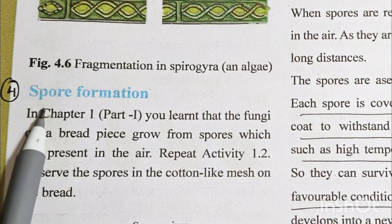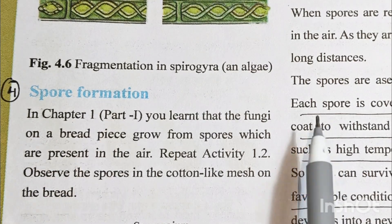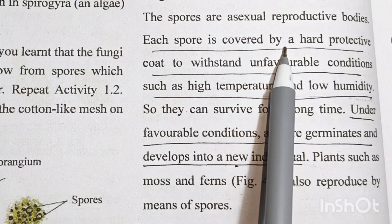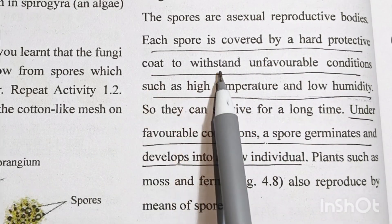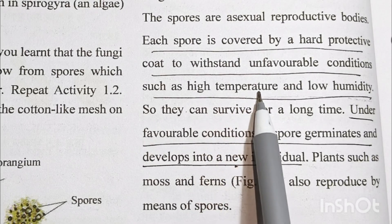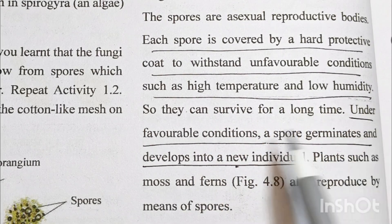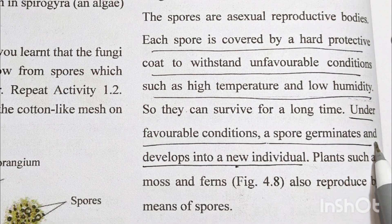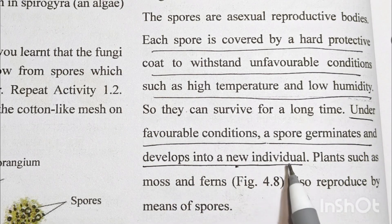Number 4 is spore formation. The spore is covered by a hard protective coat to withstand unfavorable conditions such as high temperature and low humidity. Under favorable conditions, a spore germinates and develops into a new individual.